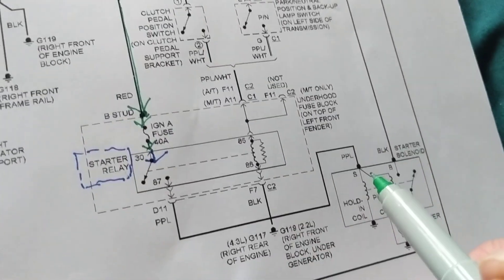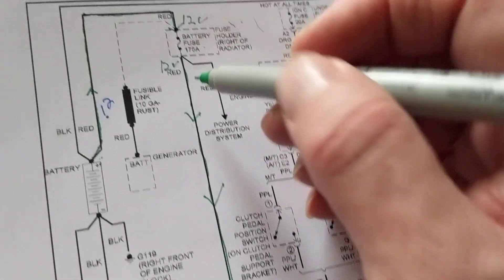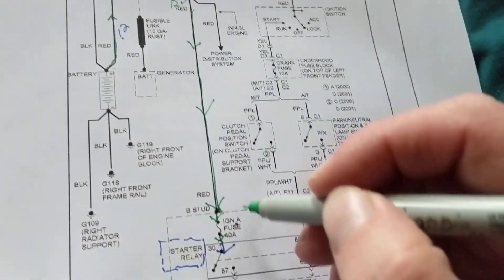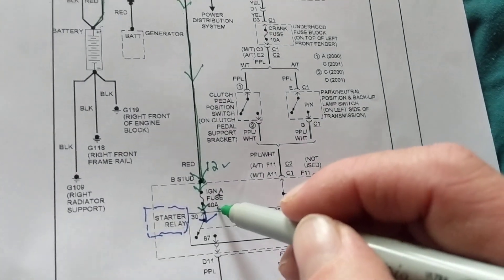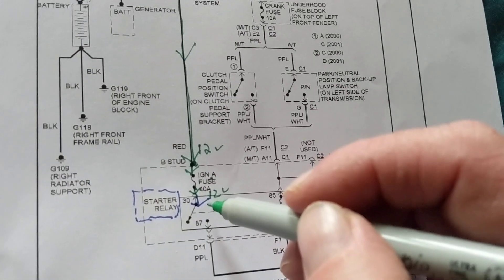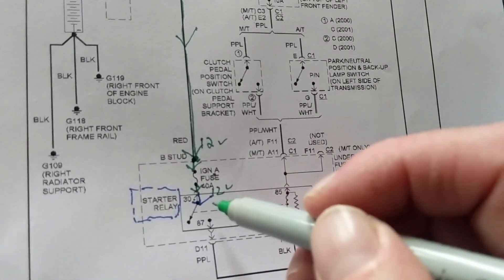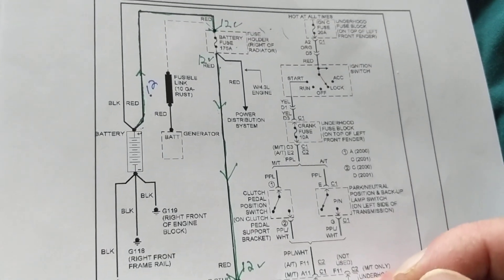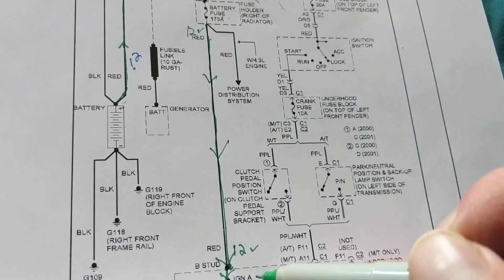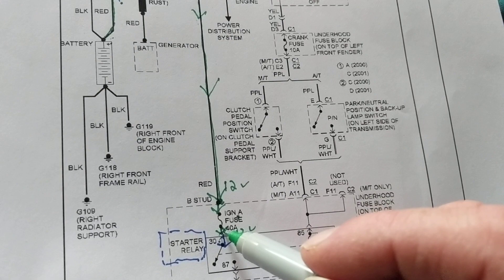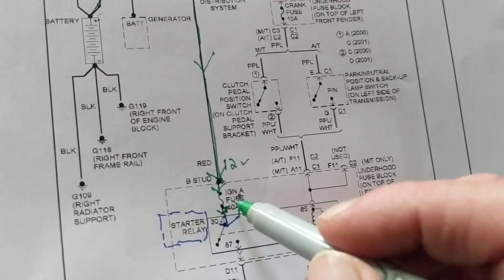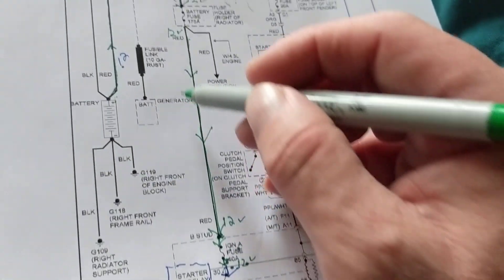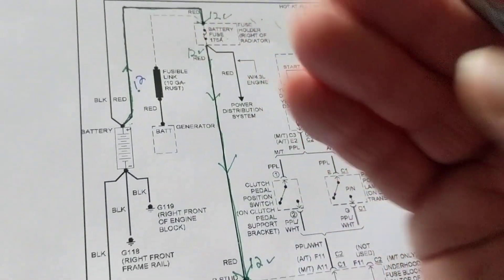From the stud we go into another fuse — the Ignition A fuse at 40 amps — and eventually this feeds the starter relay for the starter motor. So we're going through two fuses. The output should be 12 volts; the input of this fuse should be 12 volts; the output should be 12 volts going to the relay at terminal 30. If I measure 12 volts at this point, that tells me: this fuse is good, this wire is good, this fuse is good, this wire is good — four things confirmed at once.